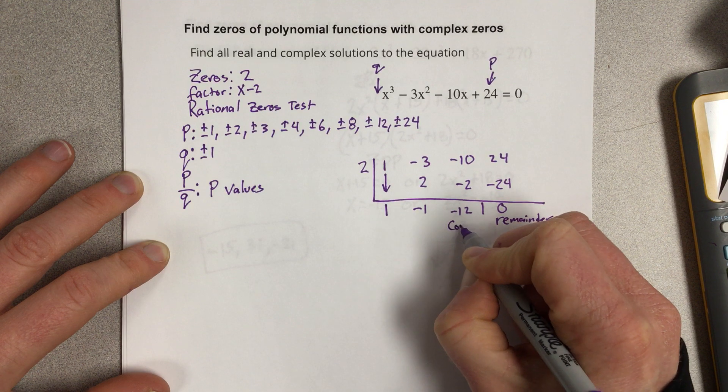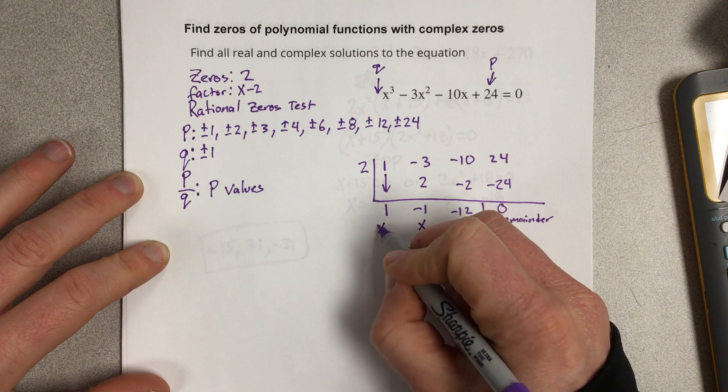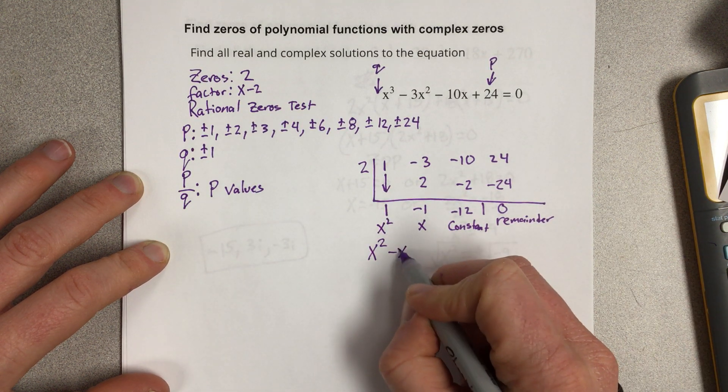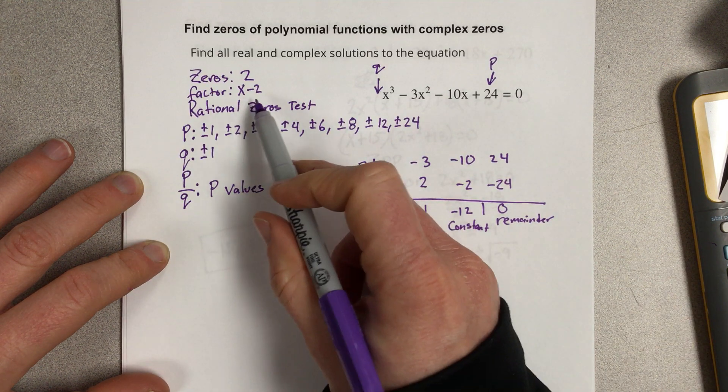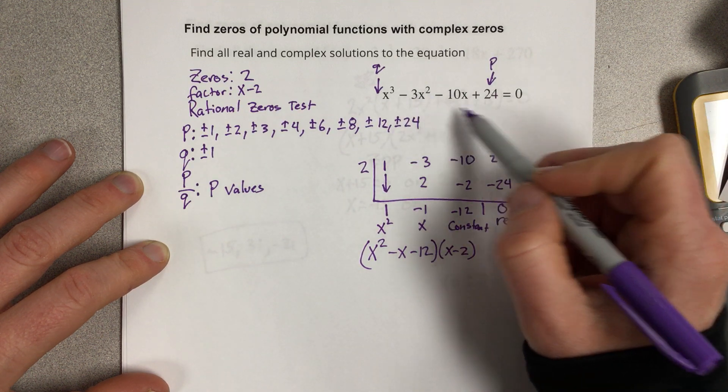This is the constant. This is the x value. This is the x² value. So I end up with x² - x - 12. That's going to be multiplied times this x - 2 up here. And when you multiply those, you get the original cubic function.